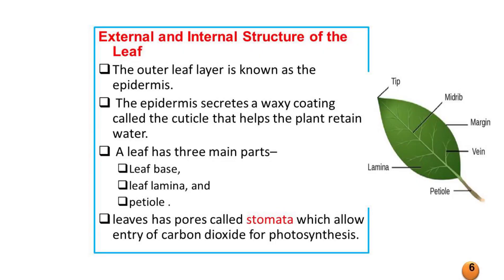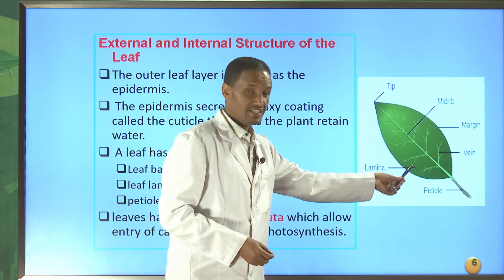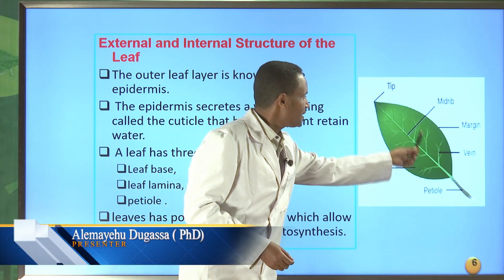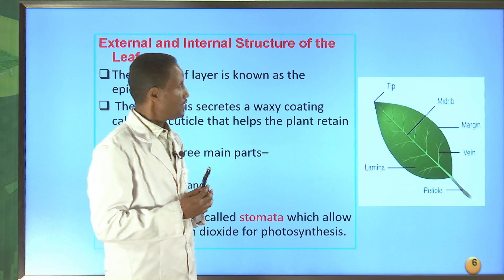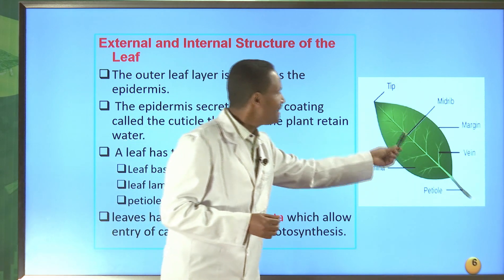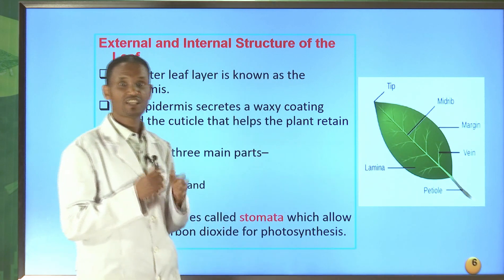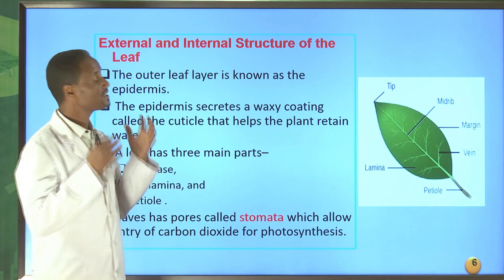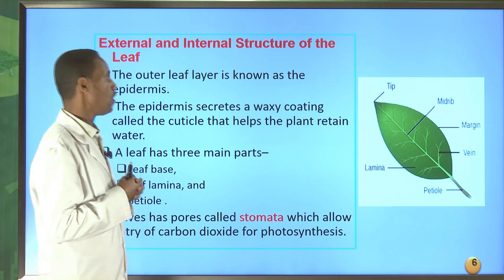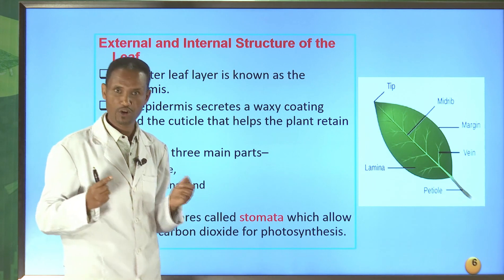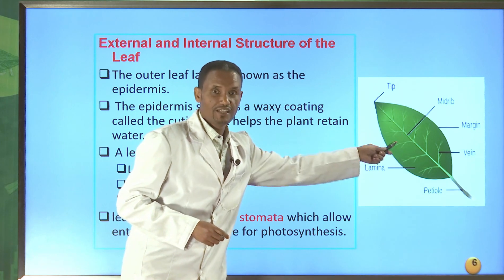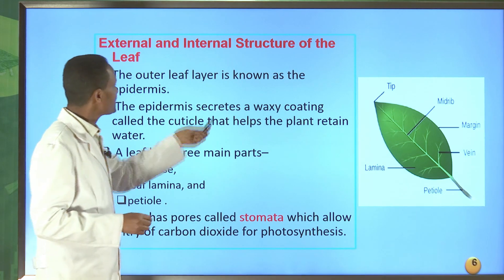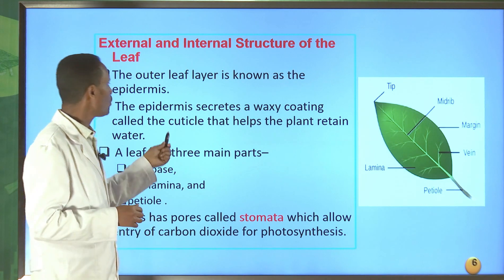Now let me explain the external and internal structure of a leaf. A leaf has different parts. In the internal sections of the leaf, they have specialized structures or cells that help them to photosynthesize — to make their own food from inorganic compounds such as carbon dioxide and water. From the external part, the leaf has a waxy coating structure which is so-called the cuticle.